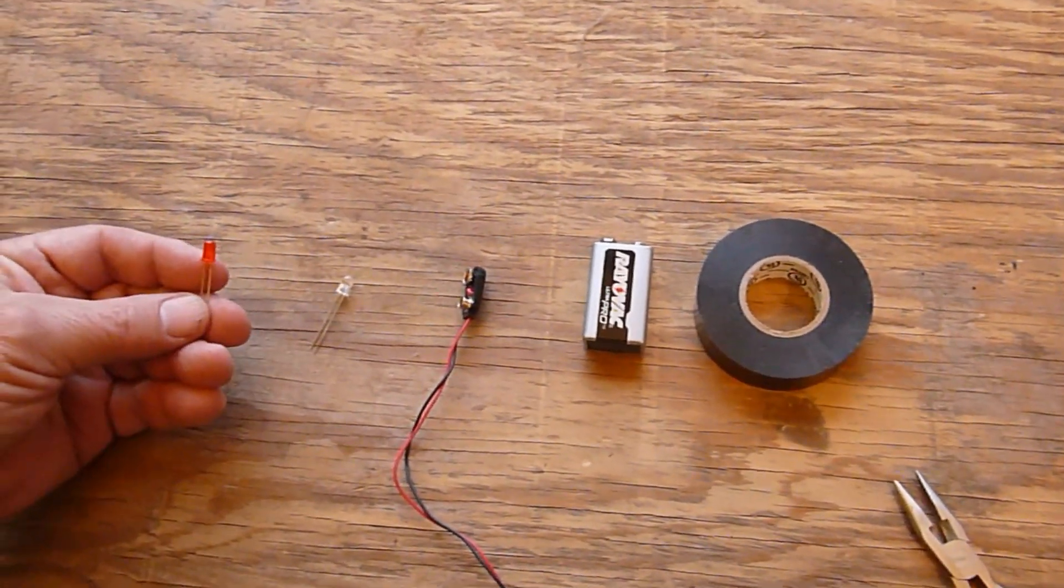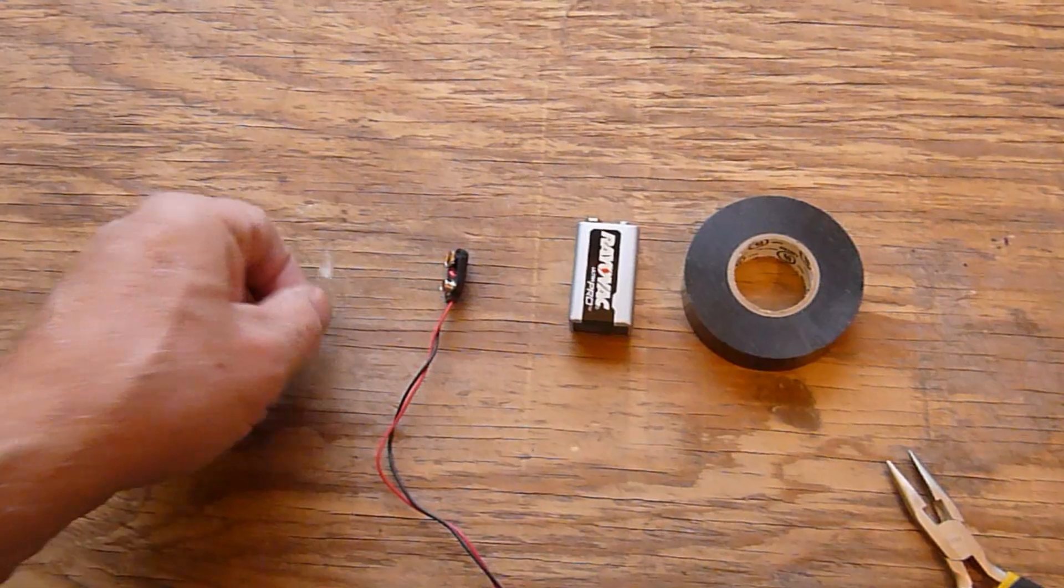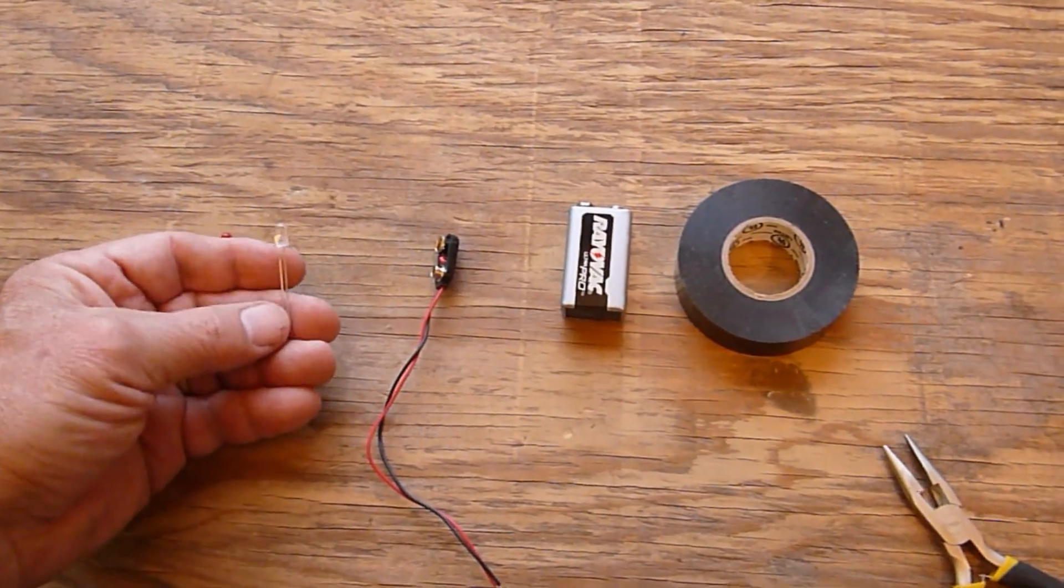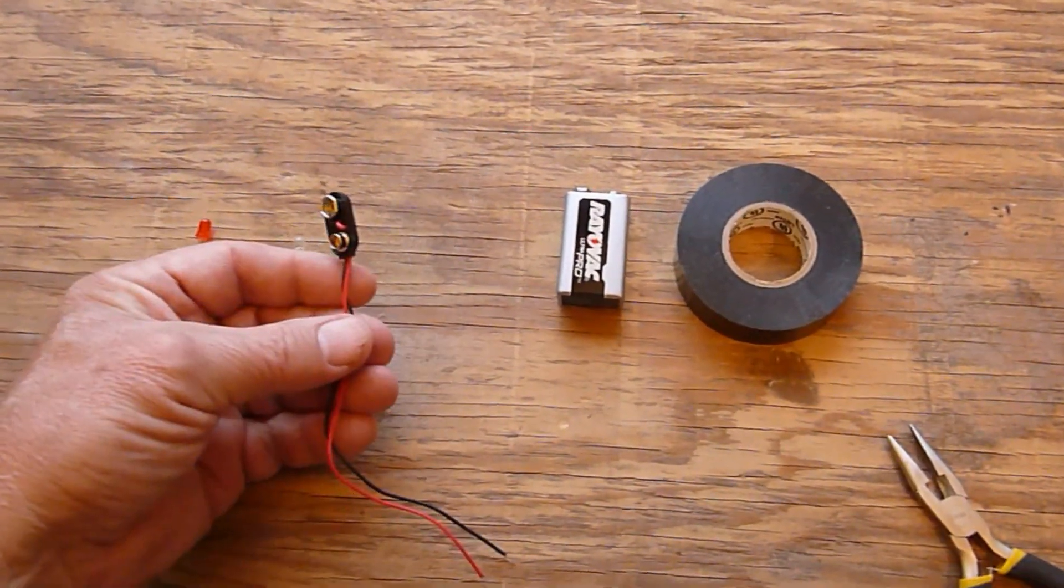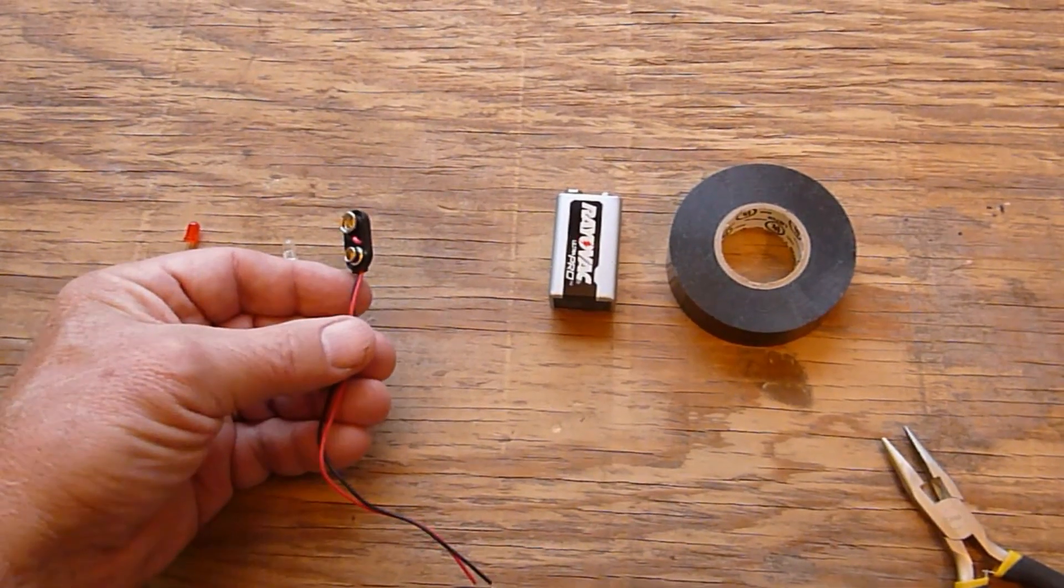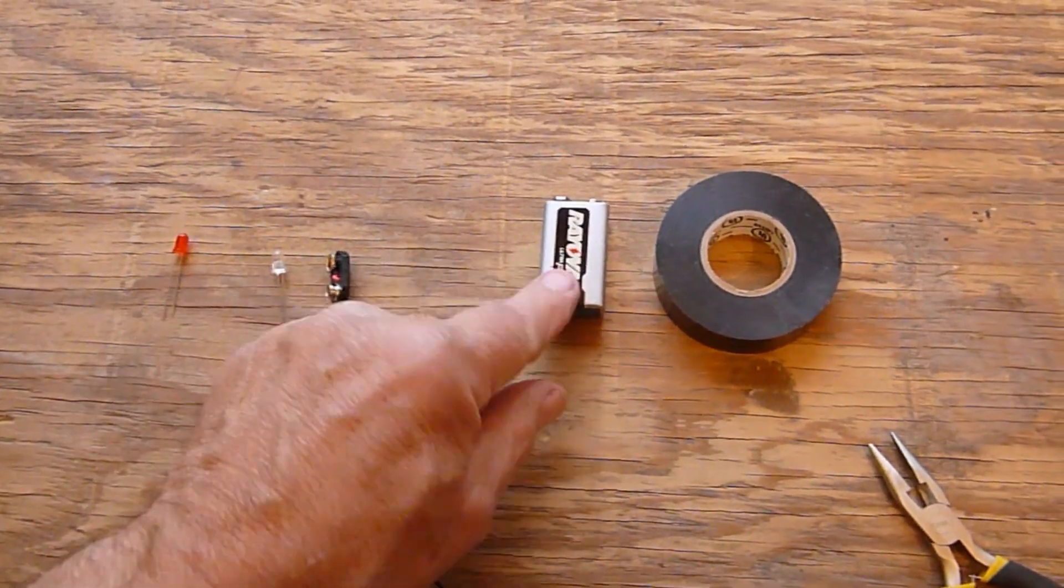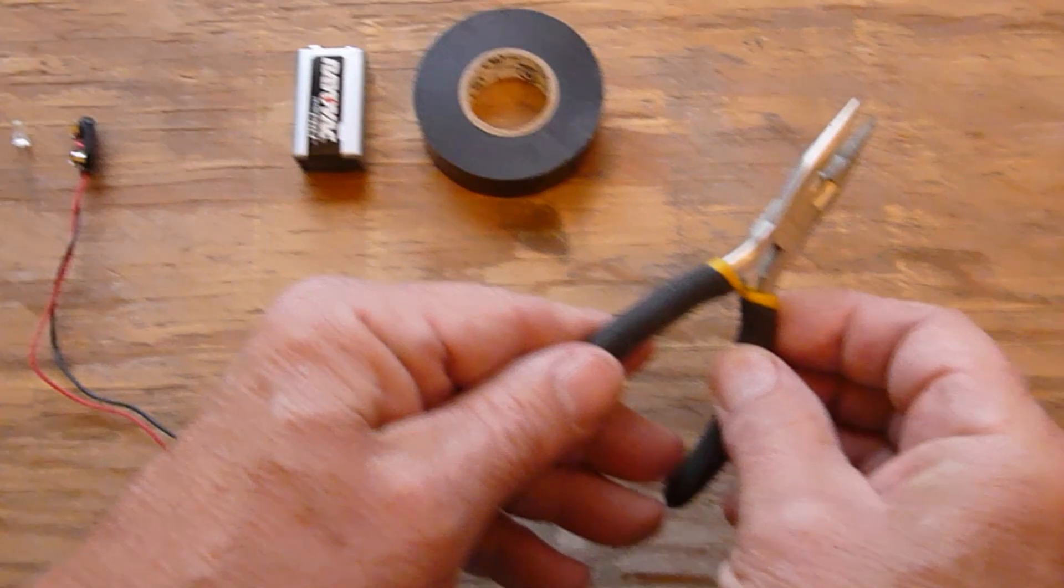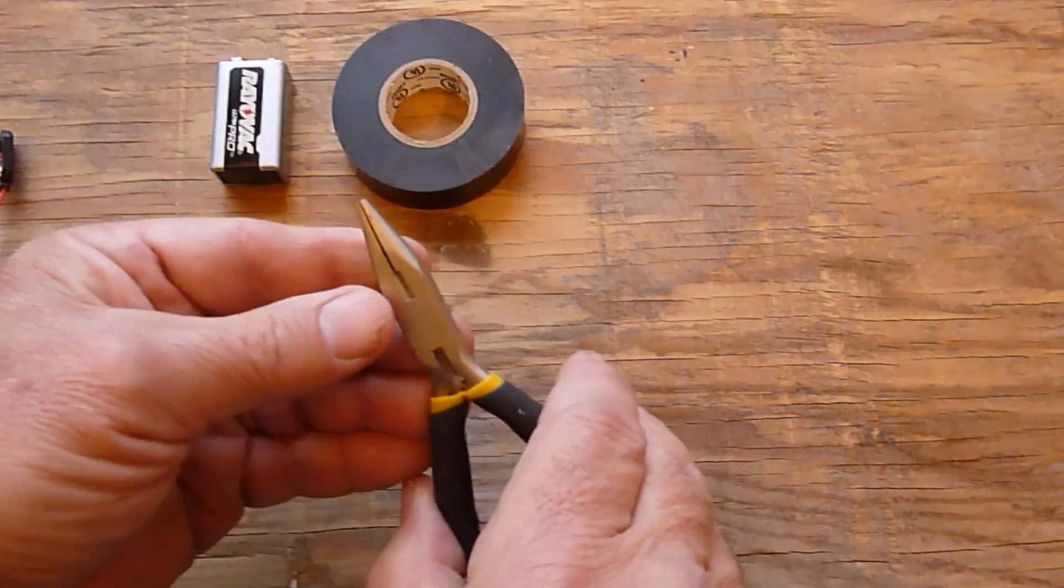A red LED, an infrared phototransistor, a snap-on 9-volt battery connector, a 9-volt battery, and electrical tape. Also, a pair of long-nose pliers will come in helpful.